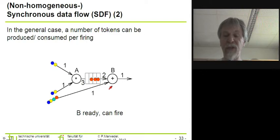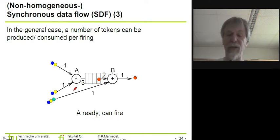Now, as a result, B is ready and can fire, so therefore we can now execute B. After the execution of B, we have removed two tokens here from the FIFO. And now A is again ready and can fire, whereas B is not.